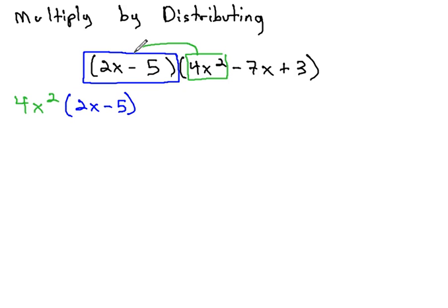We will continue distributing as we multiply the 2x minus 5 times the negative 7x. We now have negative 7x multiplied by the 2x minus 5.